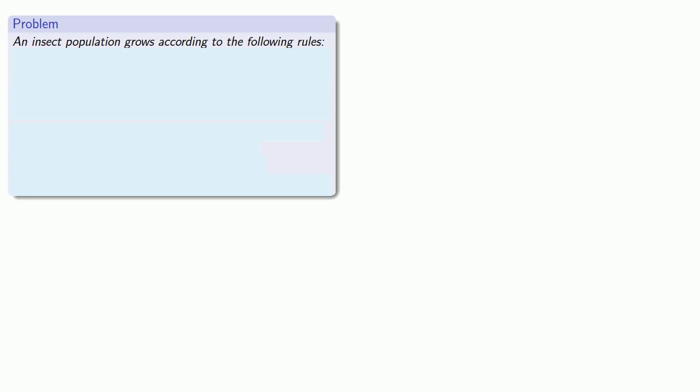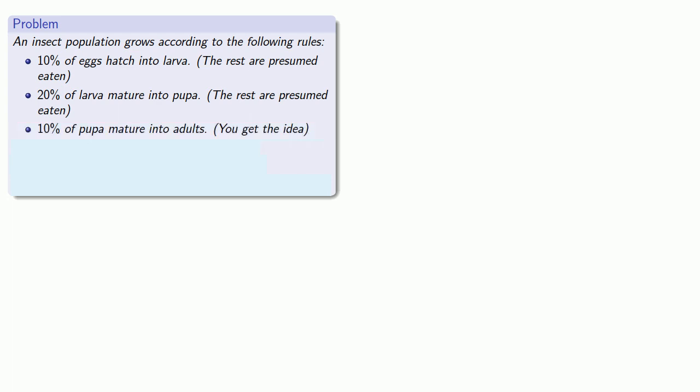So, for example, suppose I have an insect population that grows according to the following rules: 10% of eggs hatch into larvae, the rest are presumed eaten. 20% of larvae mature into pupae, the rest are presumed eaten. 10% of pupae mature into adults. You get the idea. 50% of adults survive one time cycle, and every adult produces 100 eggs.